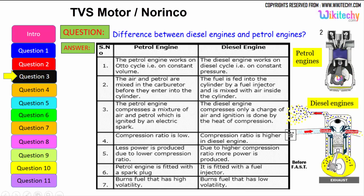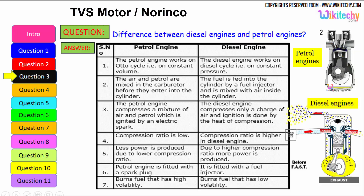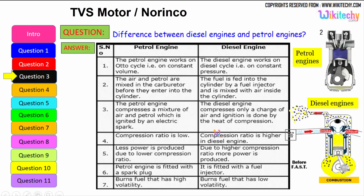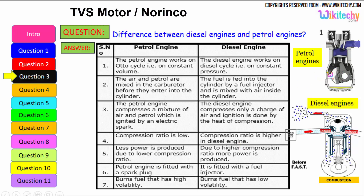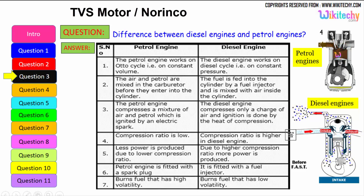The petrol engine compresses a mixture of air and petrol, which is ignited by an electrical spark. The diesel engine compresses only a charge of air, and ignition is done by the heat of compression. The petrol engine has a lower compression ratio, producing less power, while the diesel engine has a higher compression ratio, producing more power. The petrol engine is fitted with a spark plug, while the diesel engine is fitted with a fuel injector.